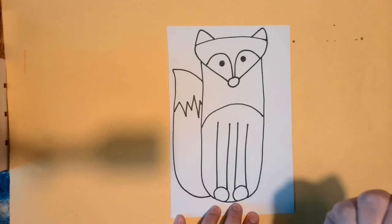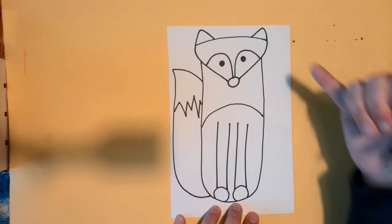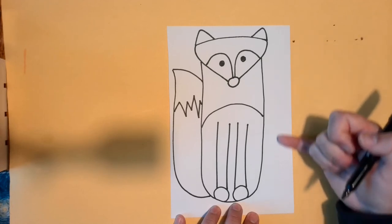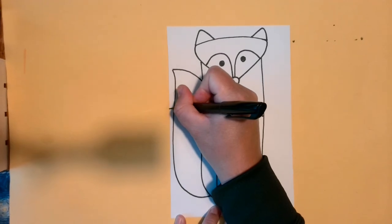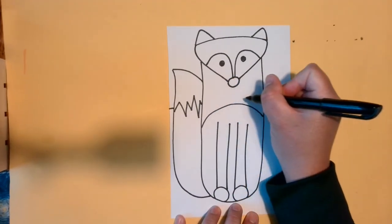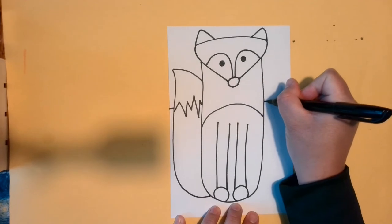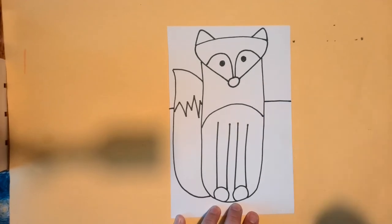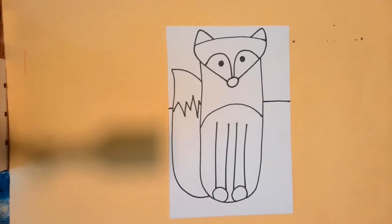Then, to make the horizon line, the line where the sky stops and the ground begins, I'm going to make a line that stops, because I don't want to draw over top of my fox. I'm going to start again on the other side, and continue. And that is how you draw your fox.